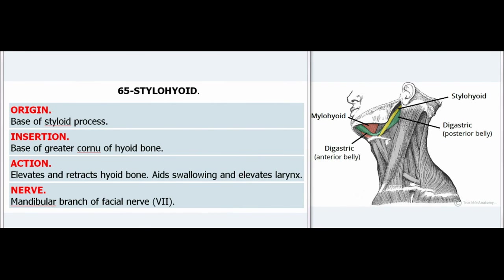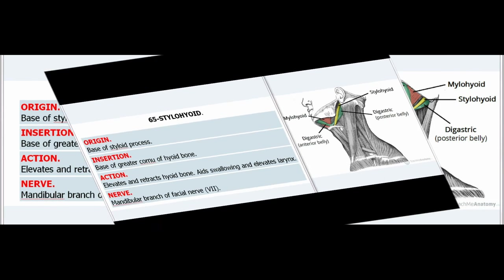65. Stylohyoid. Origin: Base of styloid process. Insertion: Base of greater cornu of hyoid bone. Action: Elevates and retracts hyoid bone, aids swallowing and elevates larynx. Nerve: Mandibular branch of facial nerve (VII).